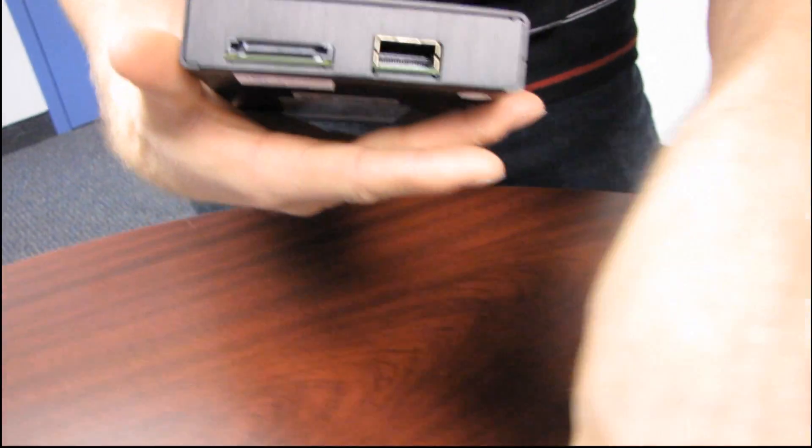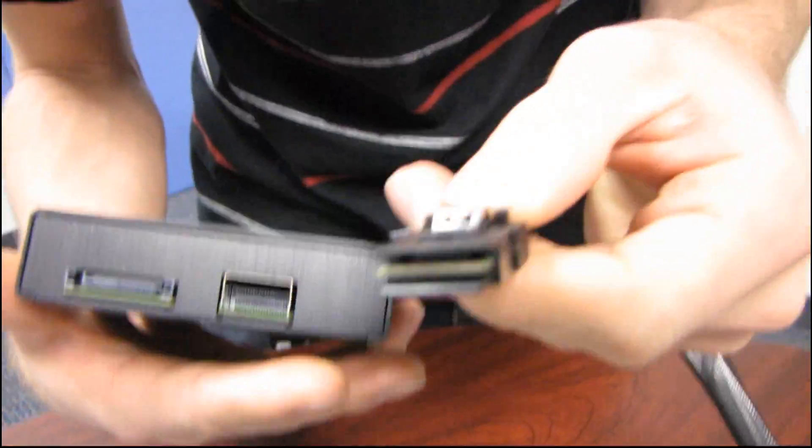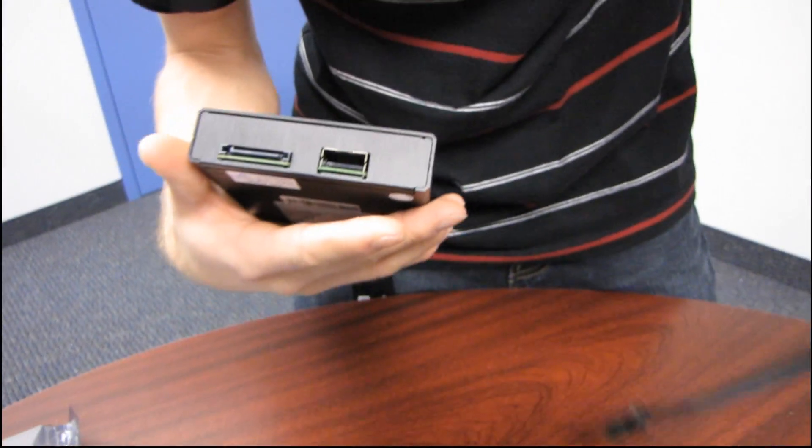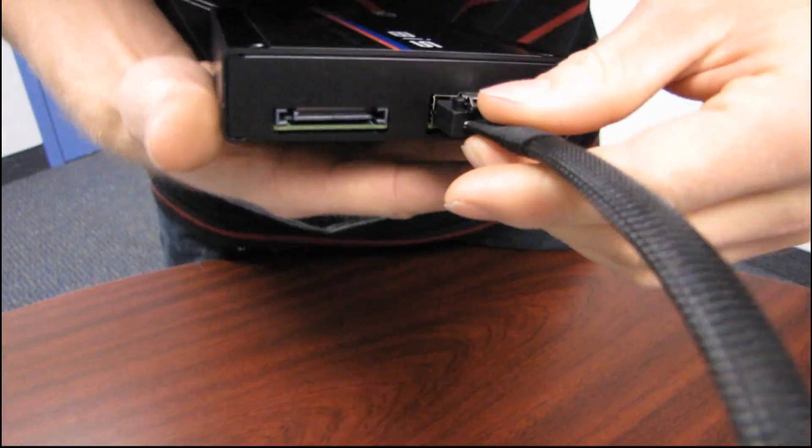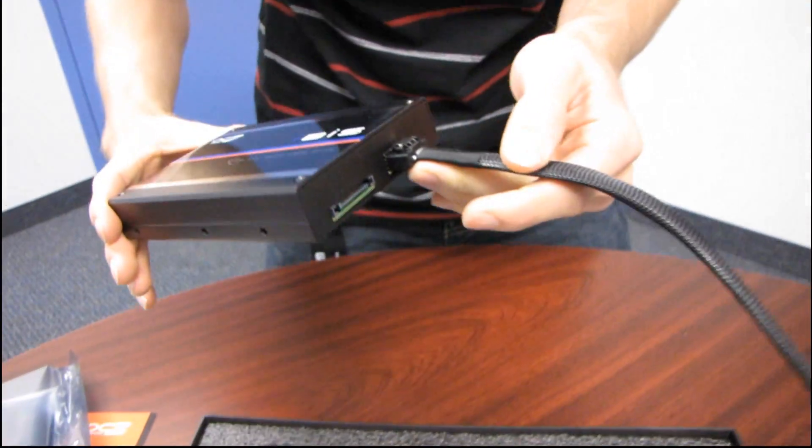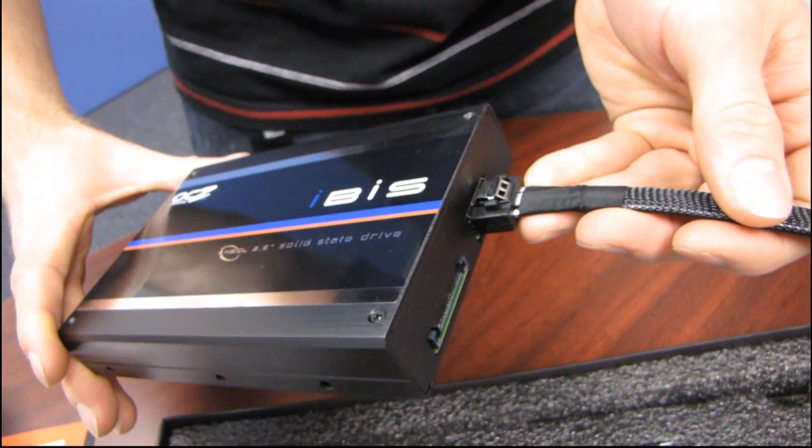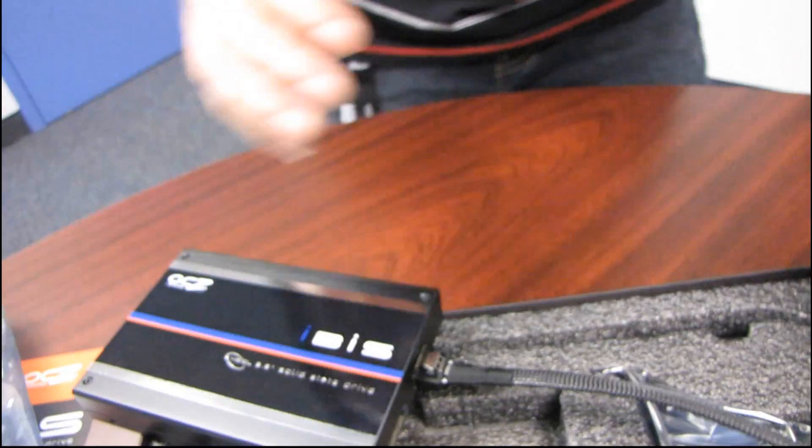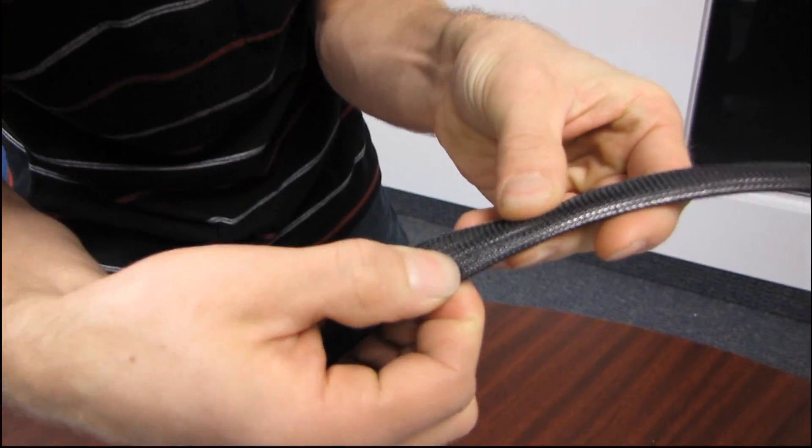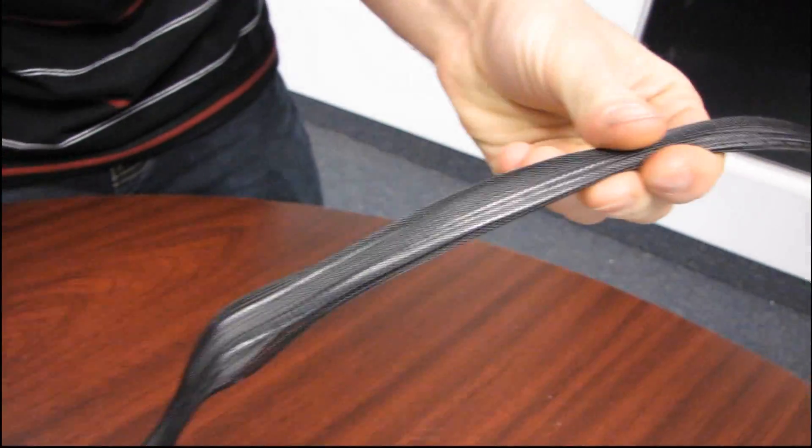And then we have an HSDL connection right there. So it actually looks kind of like an SFF 8087 cable. In fact, I think it uses one, but that's definitely like not a standard pinout for sure. So you plug that baby right in there. That's nice. And that is the equivalent of several SATA 6 gigabit per second connections. So you go ahead, it comes with a nice little sleeved cable here. You can see the individual wires inside there. They're kind of silvery and look all nice.